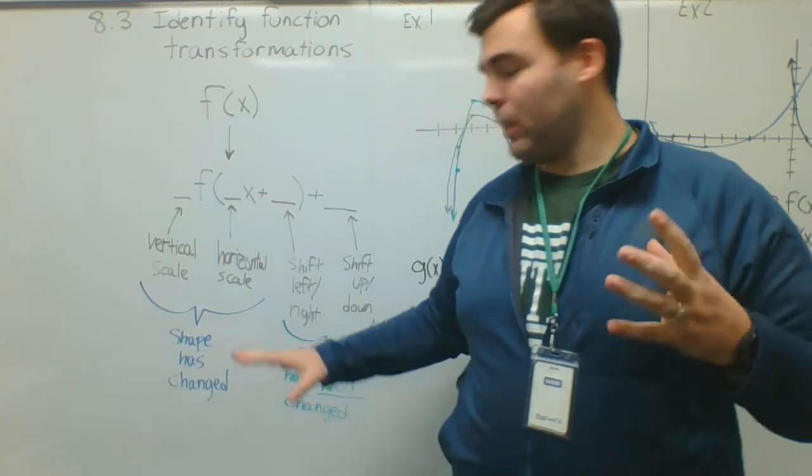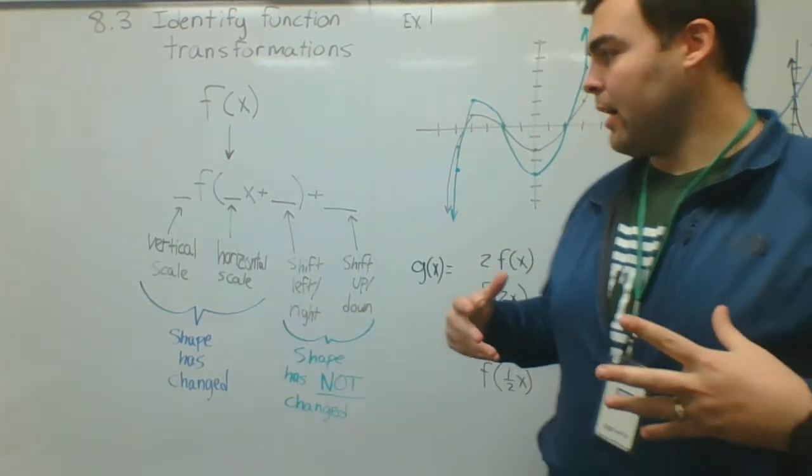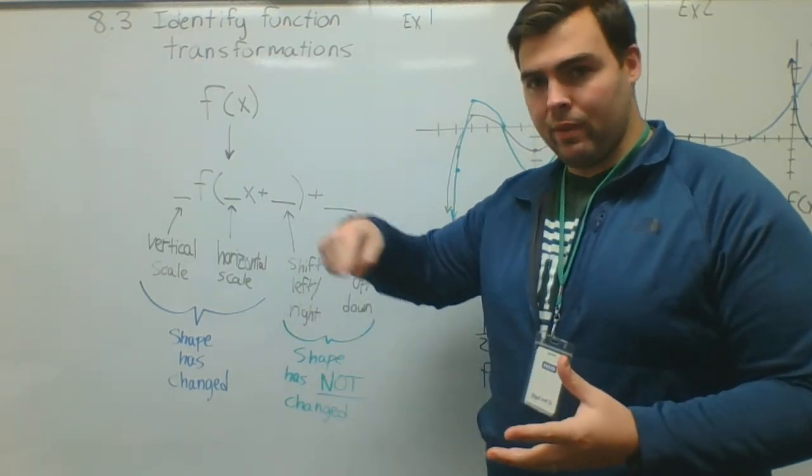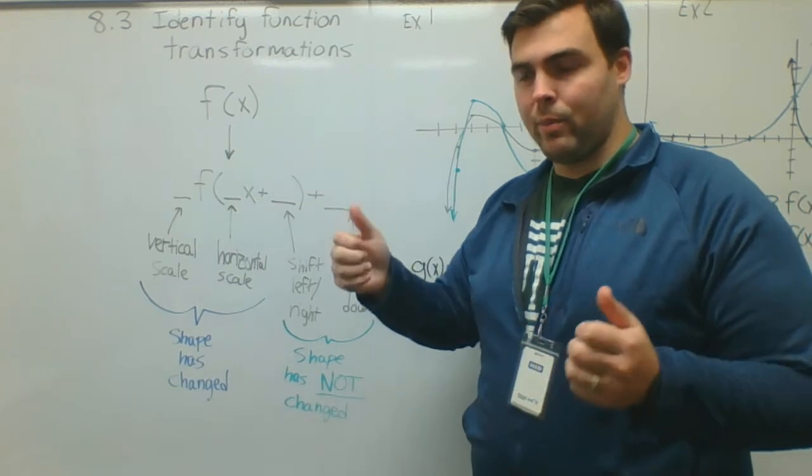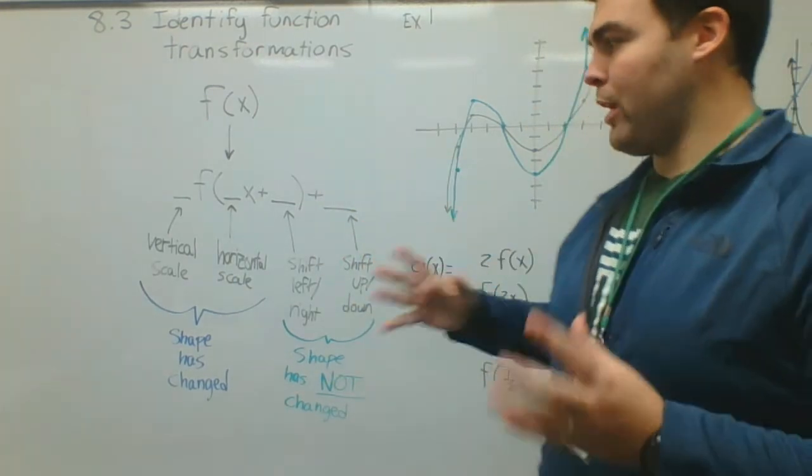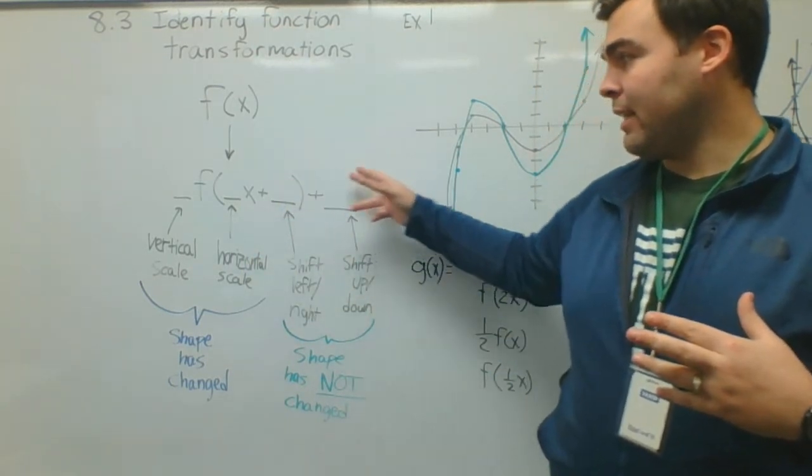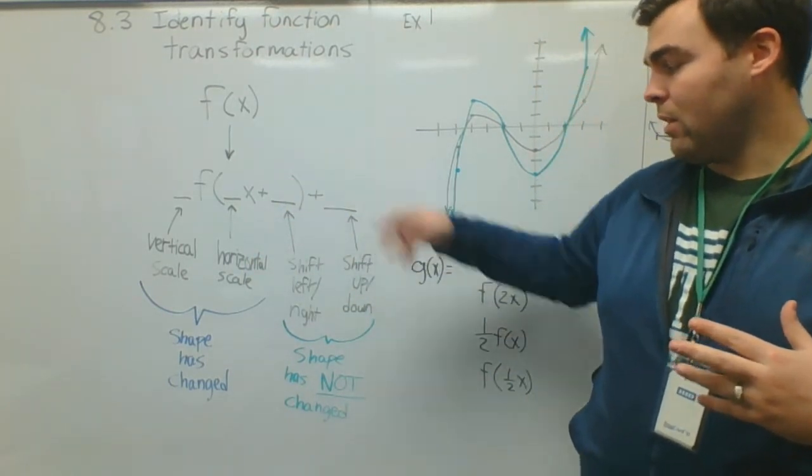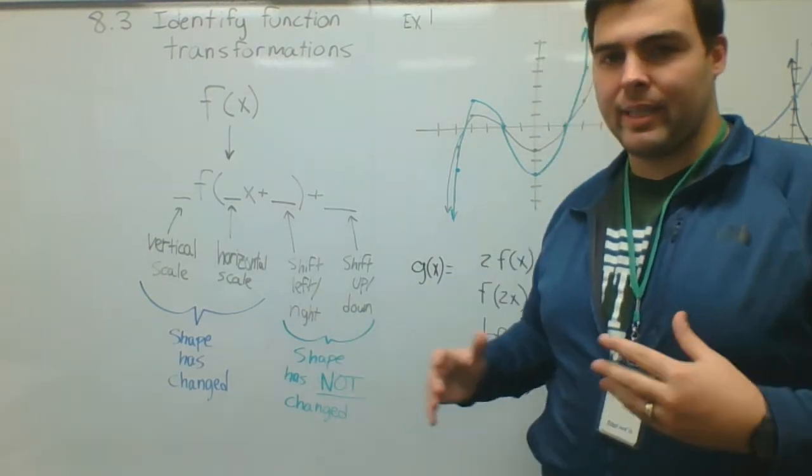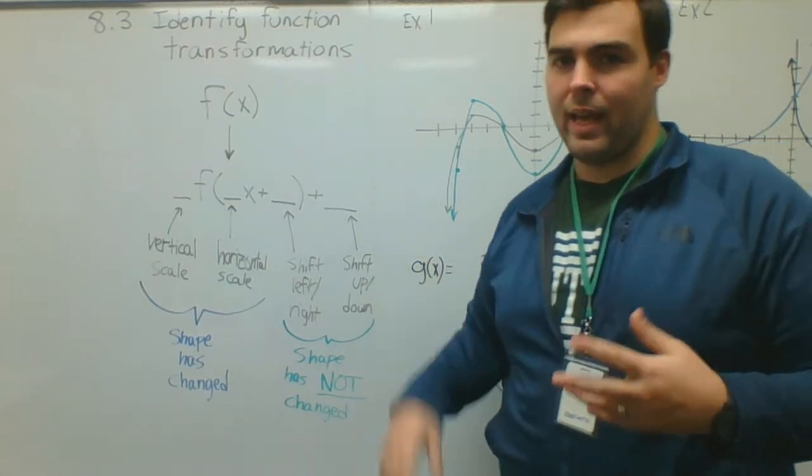Notice I put a little note next to these two. The shape will change if that is the case. So whatever shape the graph might be, it will either be compressed or stretched or something like that. It won't be the same shape. Now, on the other hand, if you shift either horizontally or vertically, left or right or up or down, the shape will not change. You'll have the same exact graph. It'll just be moved up, down, left or right.